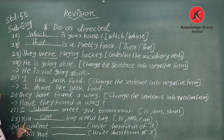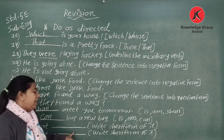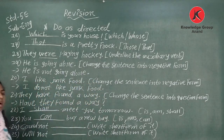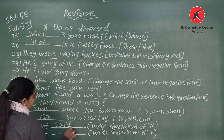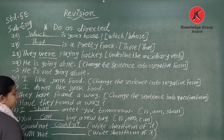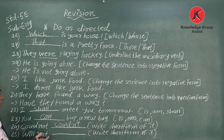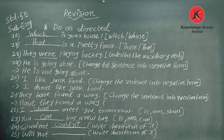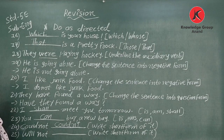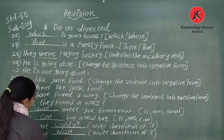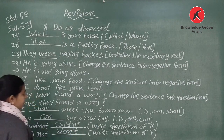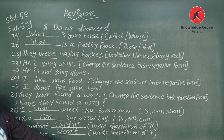Number twenty-four: Write the short form of 'could not.' The short form is 'couldn't' — C-O-U-L-D-N-apostrophe-T. Similarly, 'is not' becomes 'isn't,' 'was not' becomes 'wasn't.' Number twenty-five: Write the short form of 'will not.' The short form is 'won't' — W-O-N-apostrophe-T.